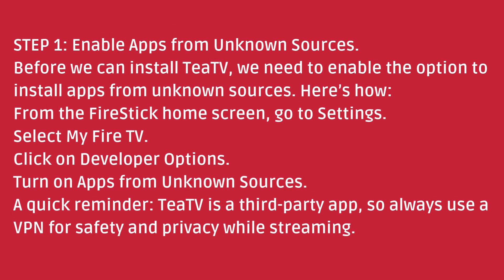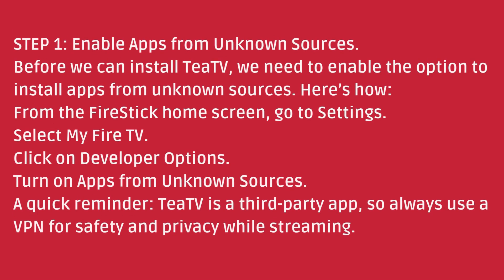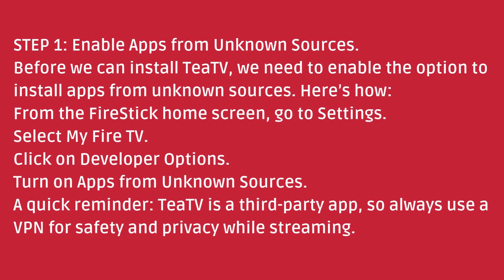Step 1: Enable apps from unknown sources. Before we can install TTV, we need to enable the option to install apps from unknown sources. Here's how: From the Firestick home screen, go to Settings. Select My Fire TV. Click on Developer Options. Turn on apps from unknown sources.